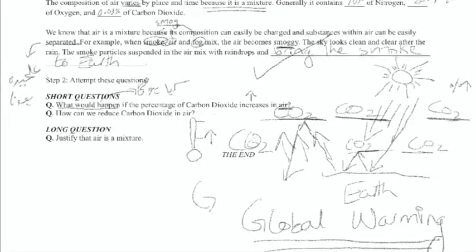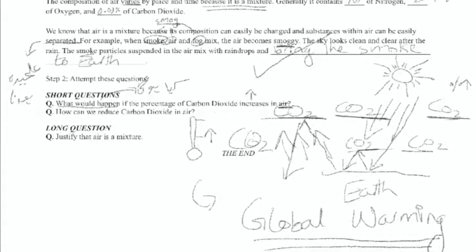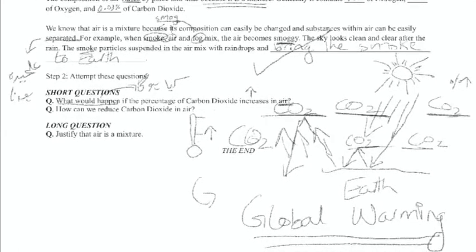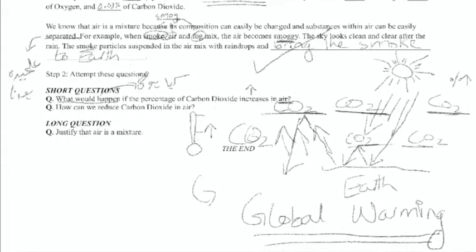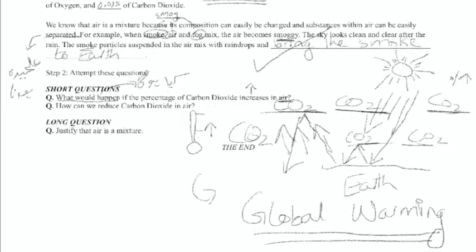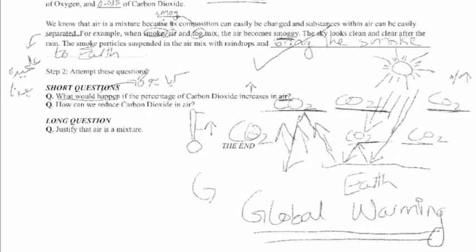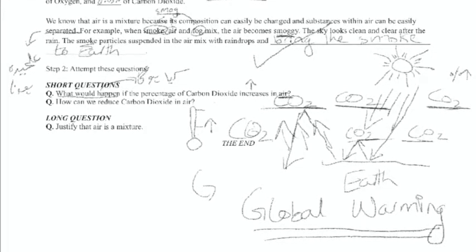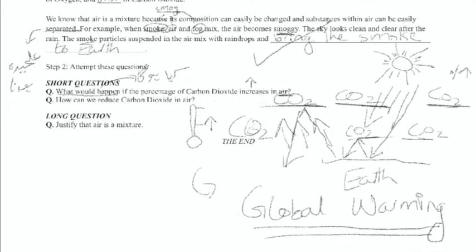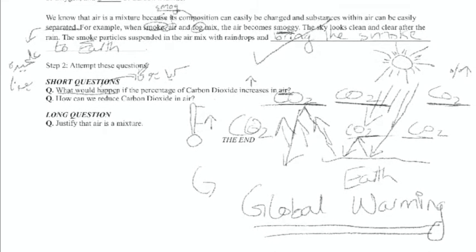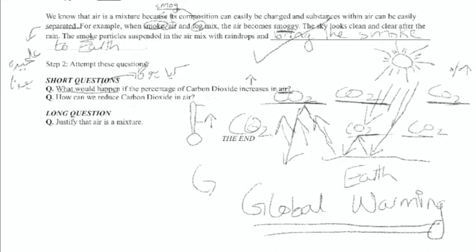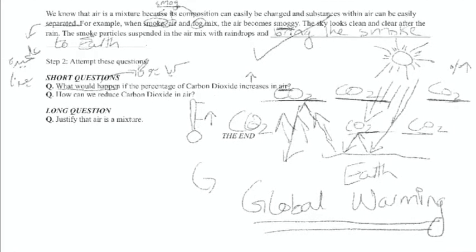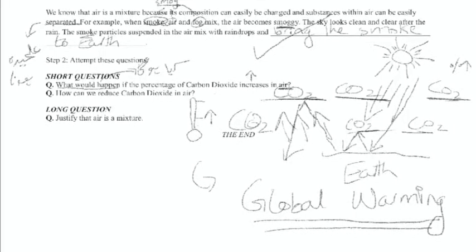The increased percentage of carbon dioxide results in an increased temperature on Earth. Full stop. This is called the greenhouse effect. Greenhouse: G-R-E-E-N-H-O-U-S-E. Effect: E-F-F-E-C-T.